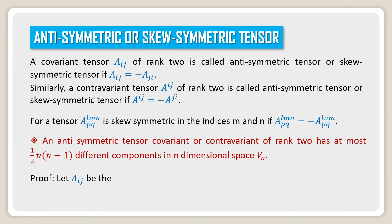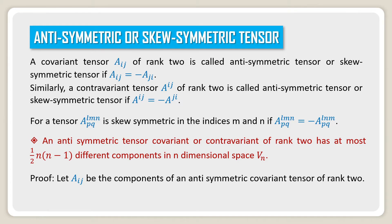Let a_ij be the components of an antisymmetric covariant tensor of rank 2. The total number of components of a_ij is n squared.